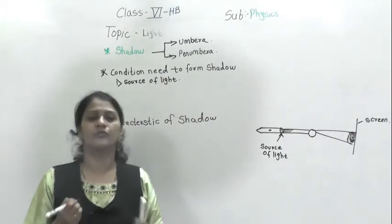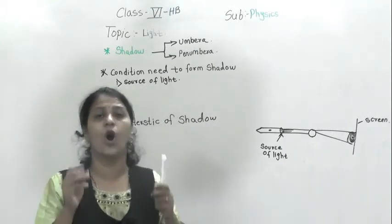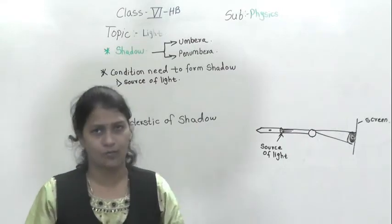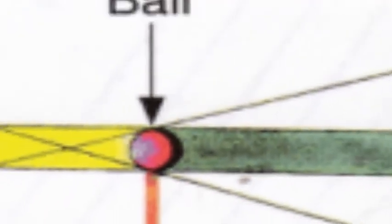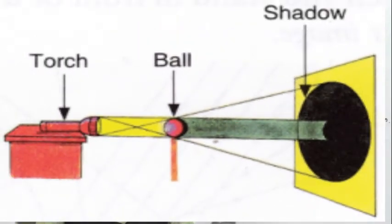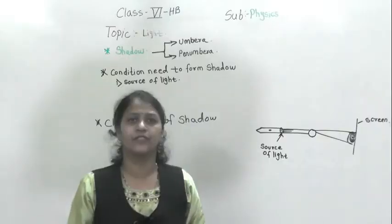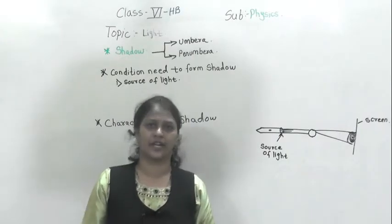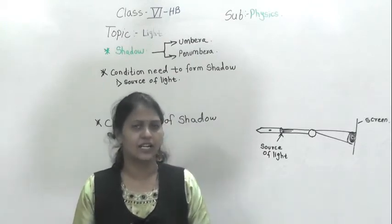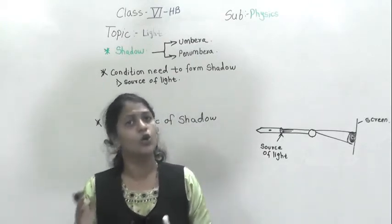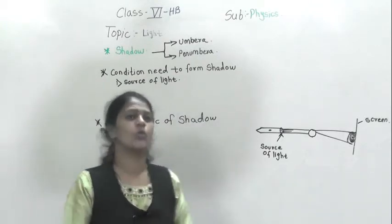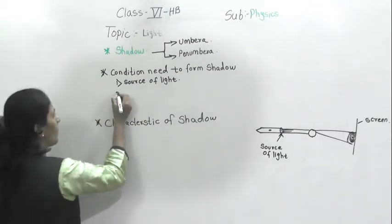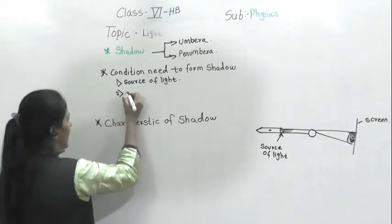The second condition is that we need an opaque object. Suppose a source of light is there and a screen is there, but if there is no object, can it cast any shadow? No. So we need an opaque object.